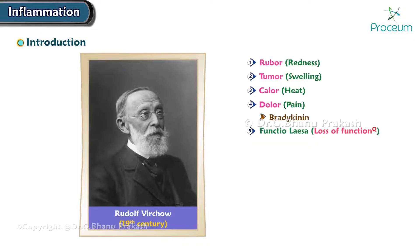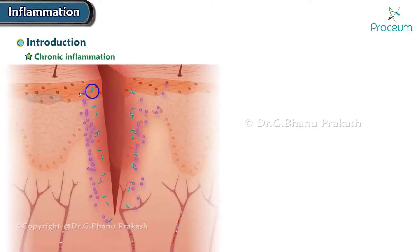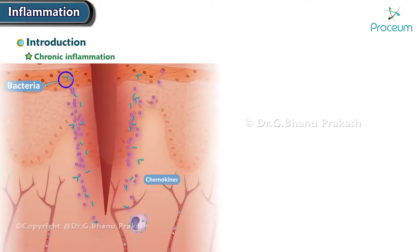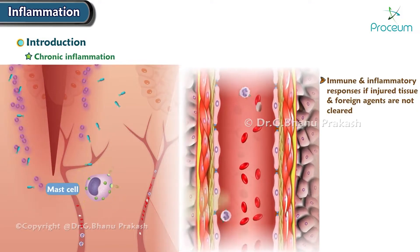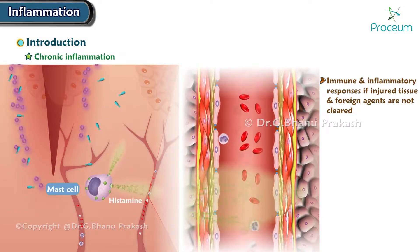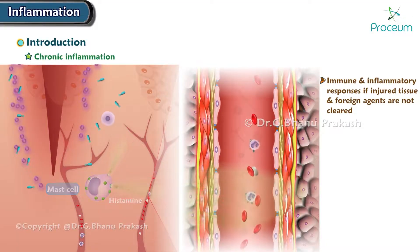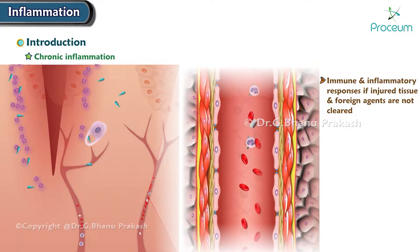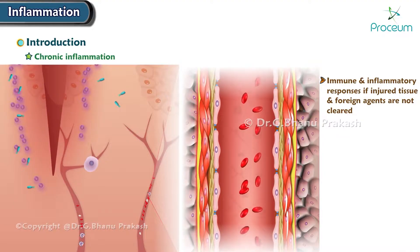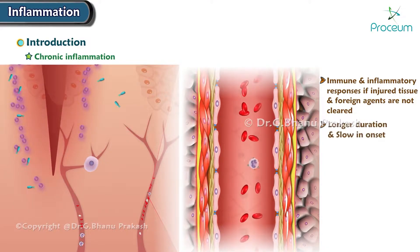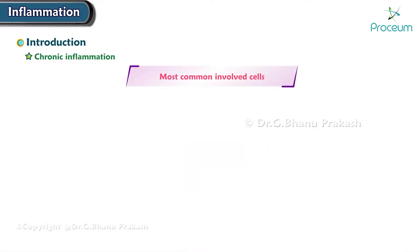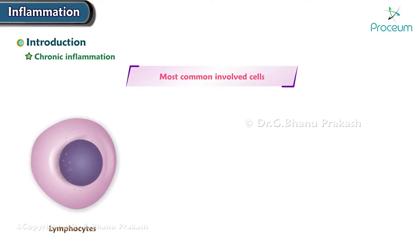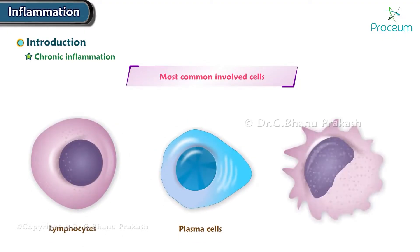Now let's talk about the second type, chronic inflammation. Some types of injury trigger sustained immune and inflammatory responses if injured tissue and foreign agents are not cleared. Such persistent responses are called chronic inflammation. Compared to acute inflammation, it is of longer duration and slow in onset. The cells most commonly involved with this type are lymphocytes, plasma cells, and macrophages.